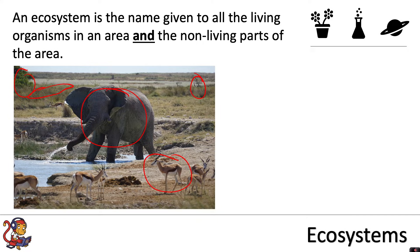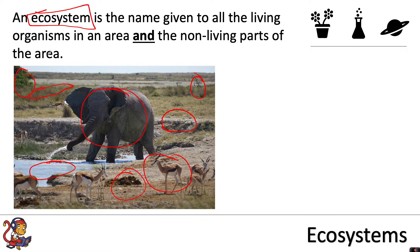For the non-living parts, you'd also be interested in the water, the rocks and the soil — perhaps what pH is the soil in this ecosystem, what minerals are the rocks made out of, and what temperature is the water at. So all those things together, you'd be looking at when you're investigating an ecosystem.